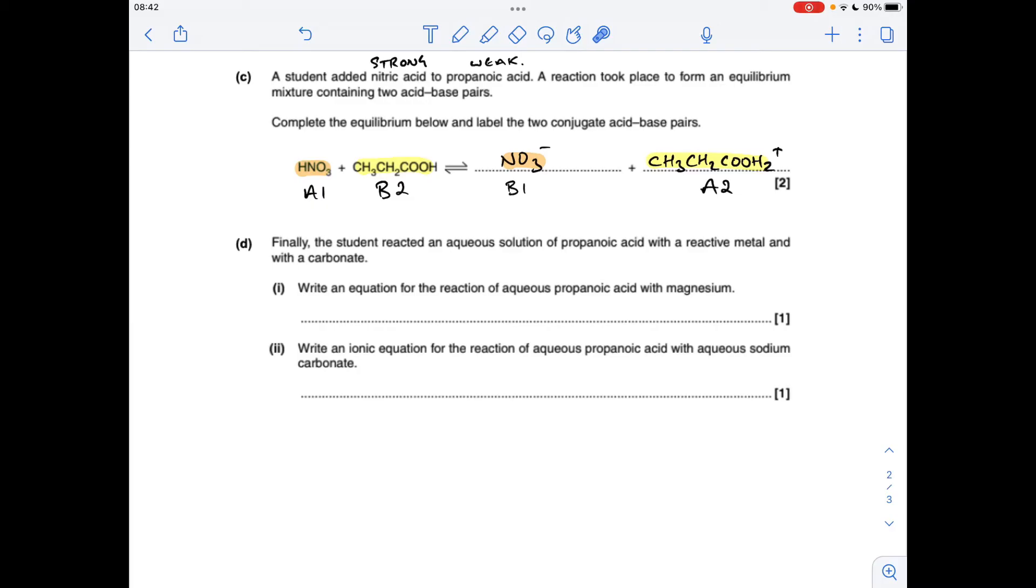And a couple of equations to finish, so the first one, equation between aqueous propanoic acid and magnesium. Just keep in the back of your mind, acid plus metal makes salt and hydrogen. So there's the equation for the first one.